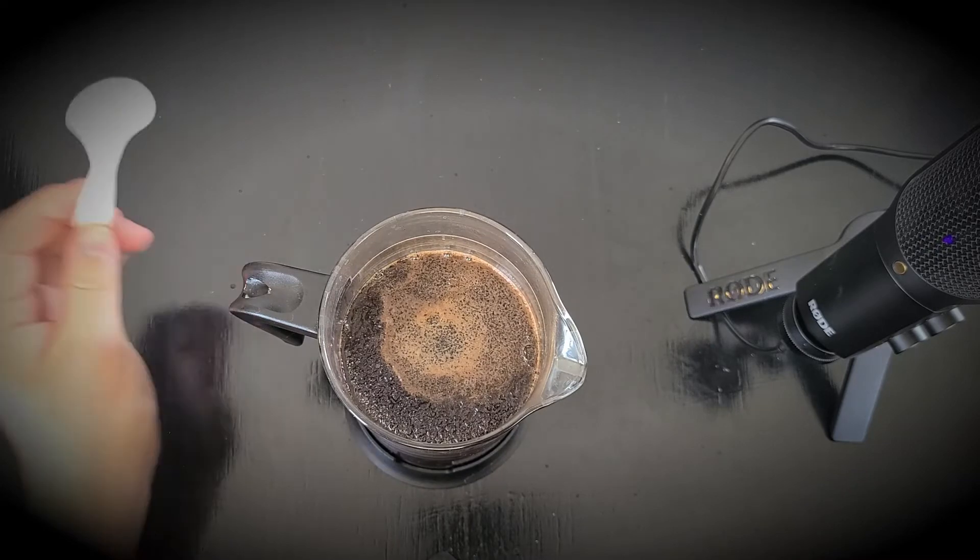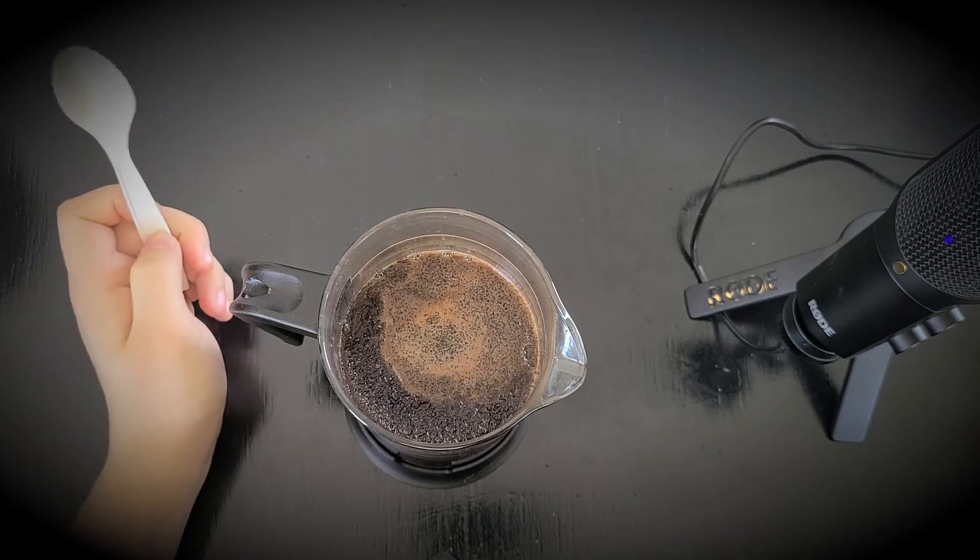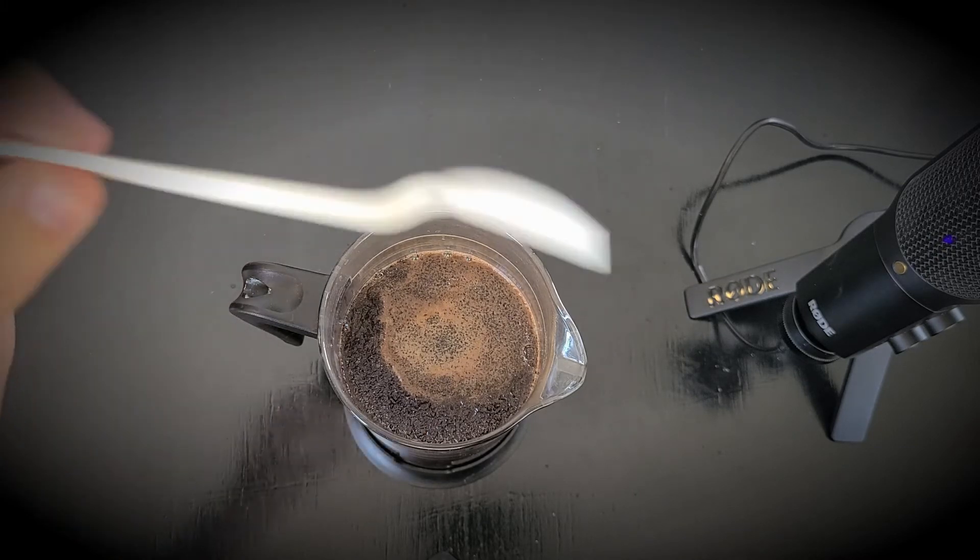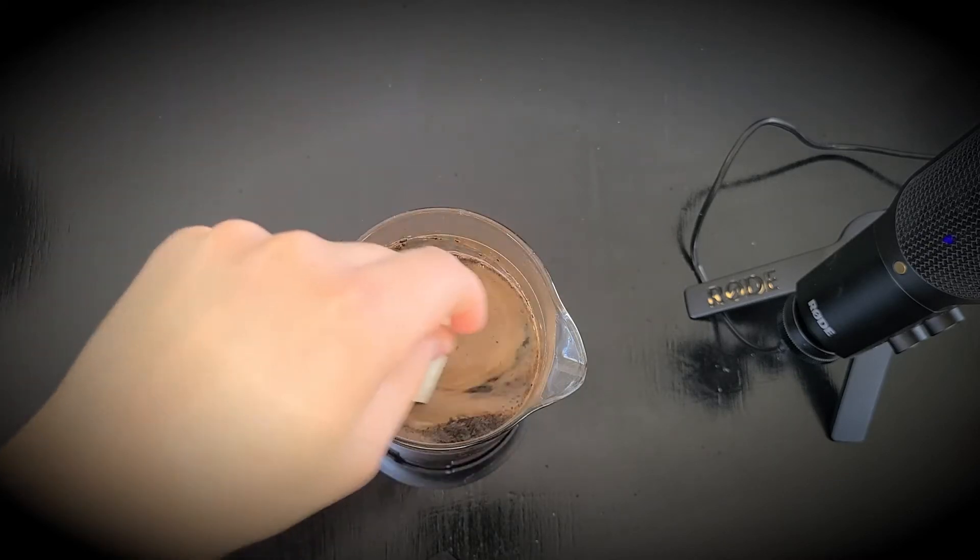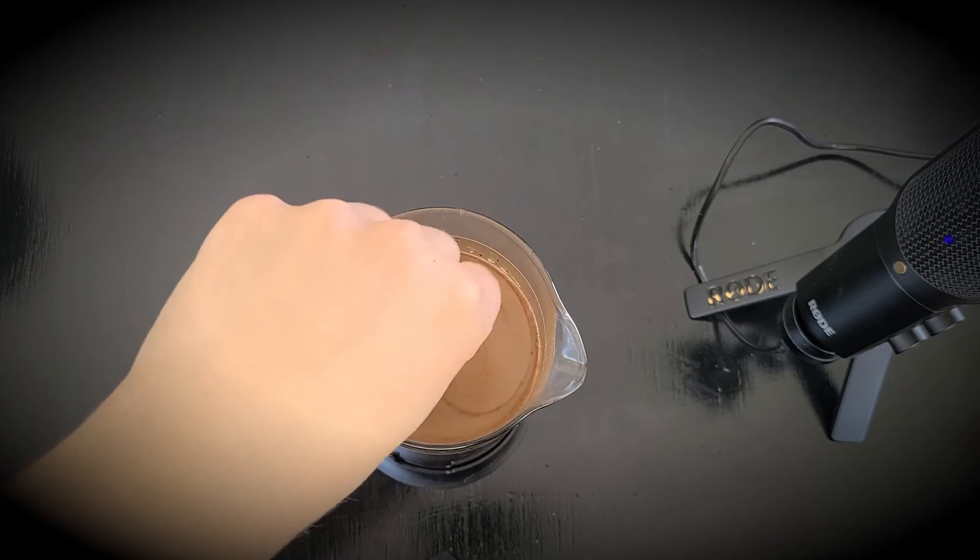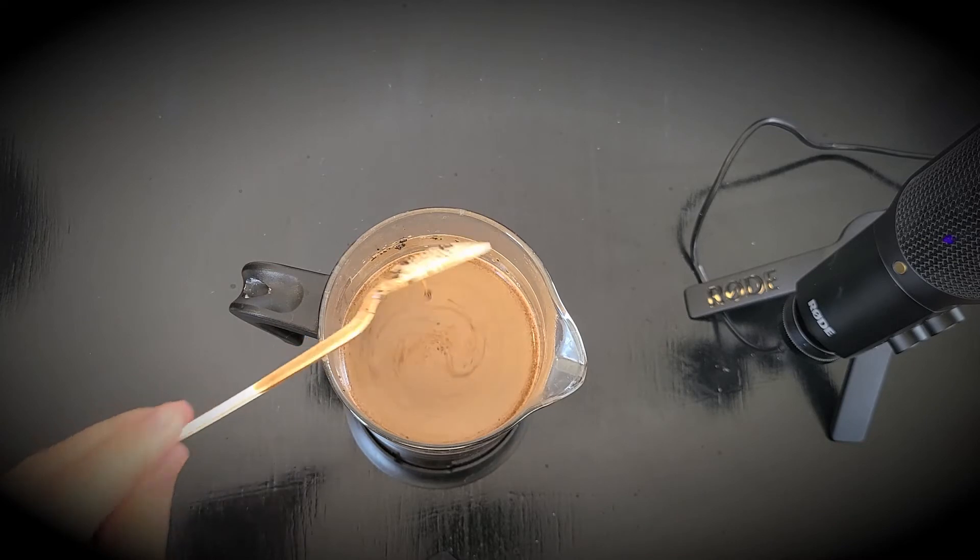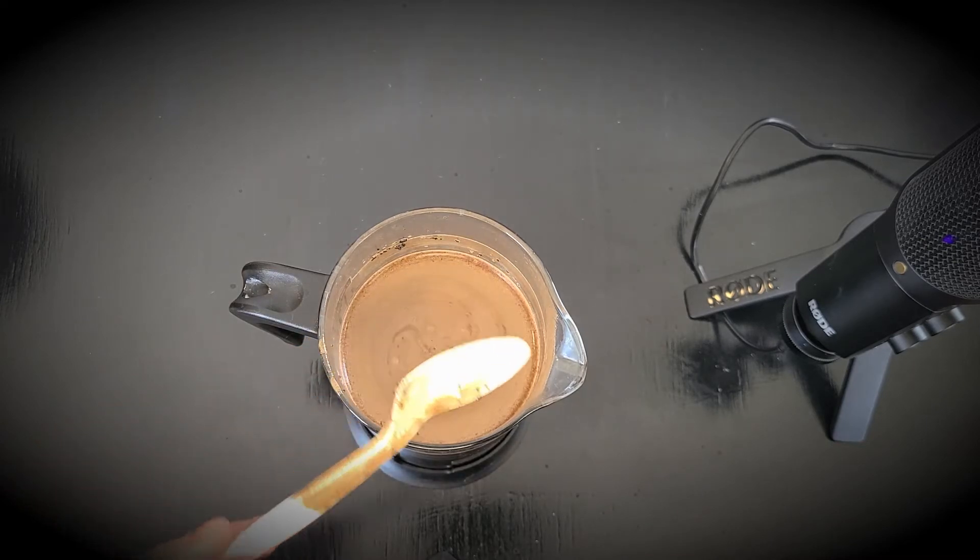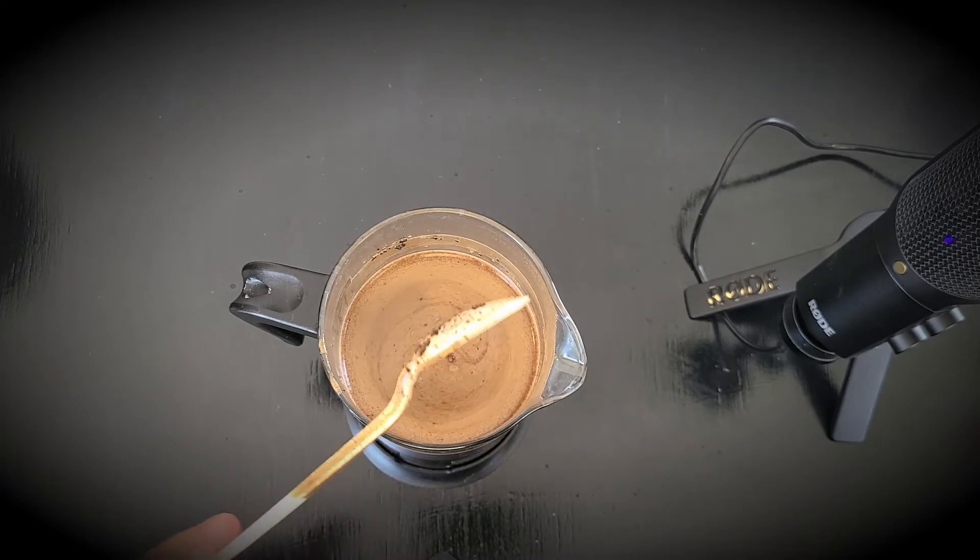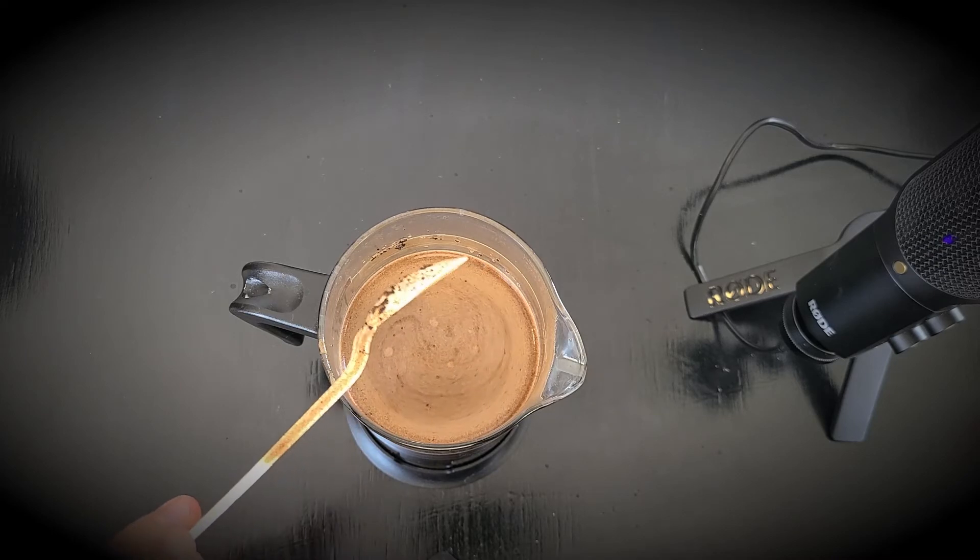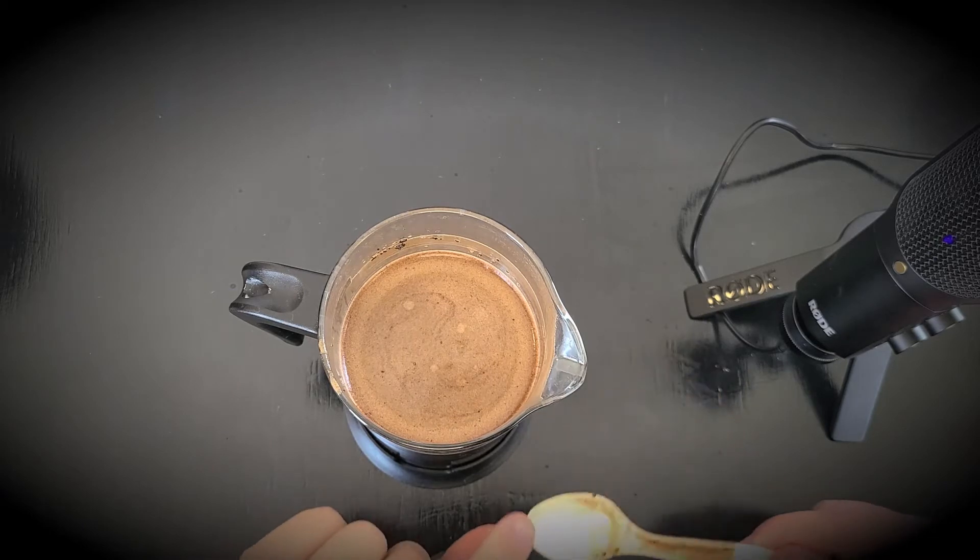So, what I like to do from here is you see these grounds that haven't broken the surface of the water. I like to just gently guide those and give it a little bit of a mix. The reason that I am using a plastic spoon as opposed to metal is that this coffee pot is made of glass.